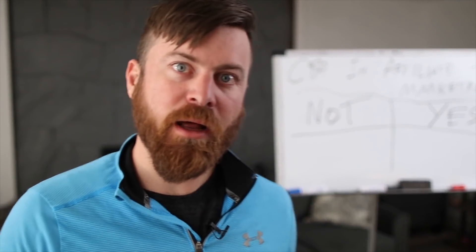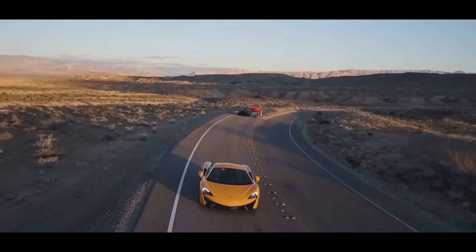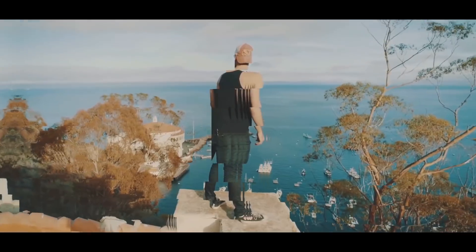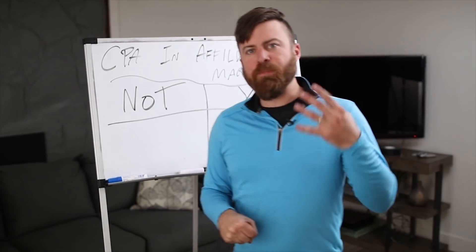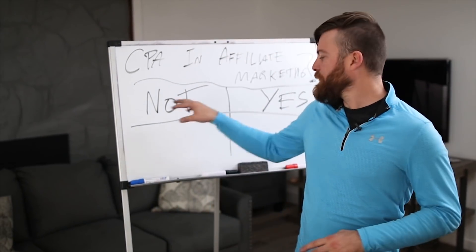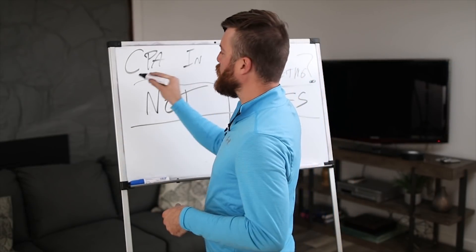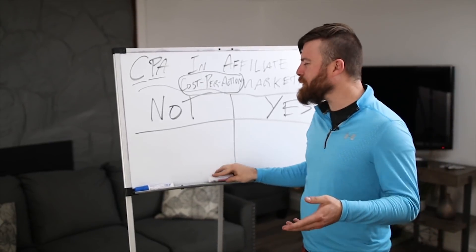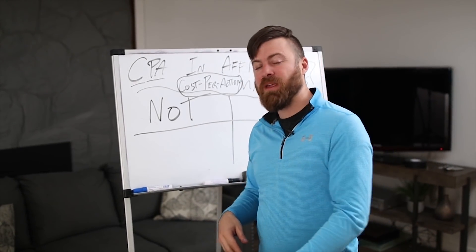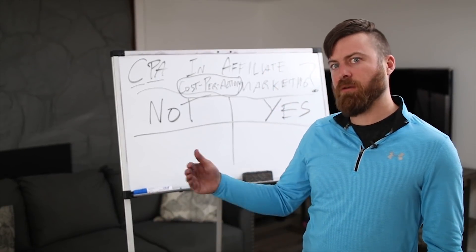Affiliate marketing has a lot of weird terminologies. I'm going to be describing one of the most common ones — what does CPA mean specifically when it pertains to affiliate marketing. CPA stands for cost per action, which means you're going to get paid a fixed amount if somebody takes a particular action.